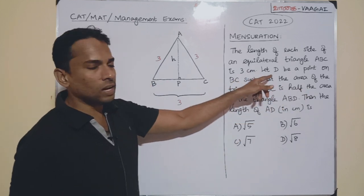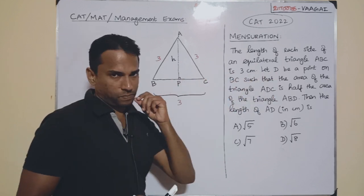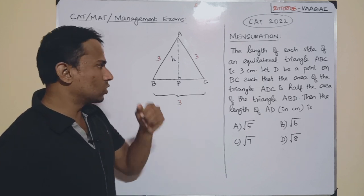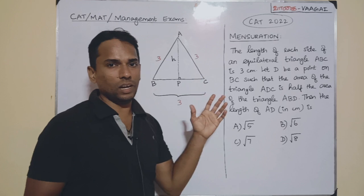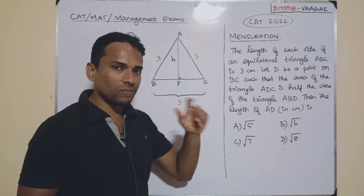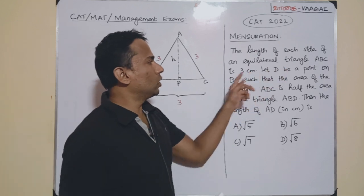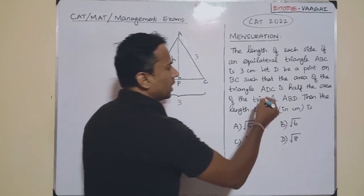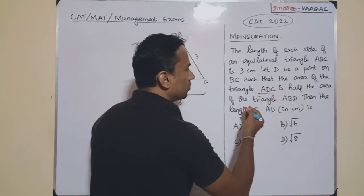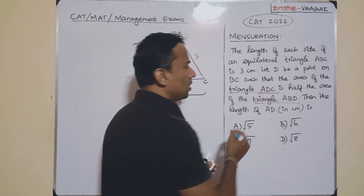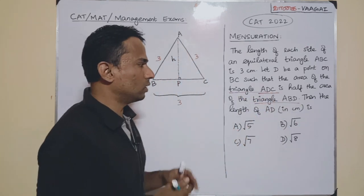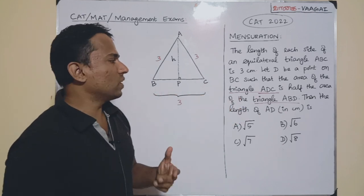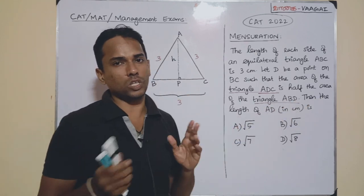Now, there is a point D lying on side BC. The D is situated in such a way that it divides the area of this triangle in a particular way. The condition is: the area of triangle ADC is going to be half the area of triangle ABD. That is going to be the condition, and we need to find the length of AD.